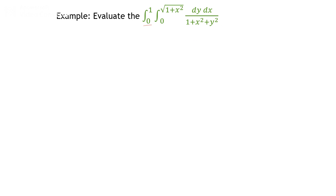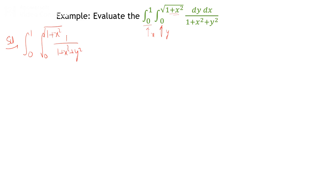Take another example: evaluate the integral from 0 to 1 and from 0 to √(1+x²) of 1/(1+x²+y²) dy dx. Notice that one limit, √(1+x²), is not constant — it is a function of x. So identify the limits: the limit of y is 0 to √(1+x²), which is a function of x, and the limit of x is 0 to 1. Since the y limit is not constant, we must integrate first with respect to y.